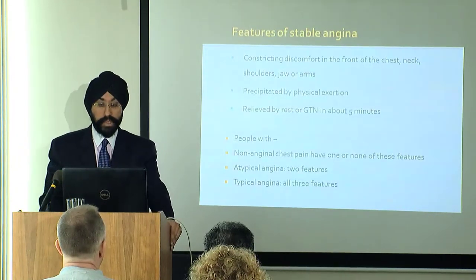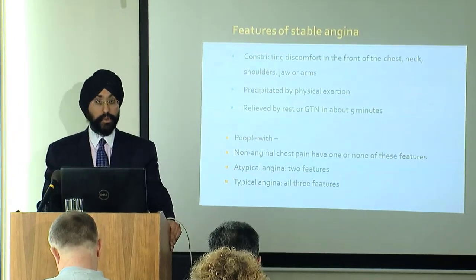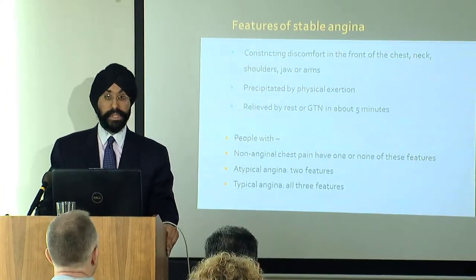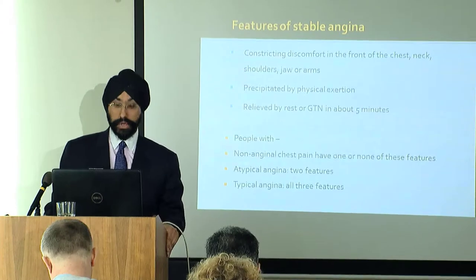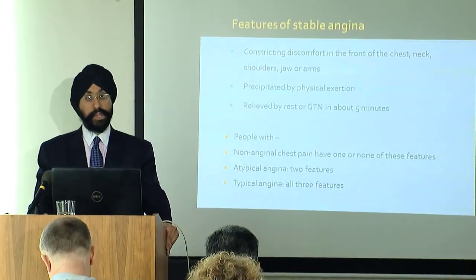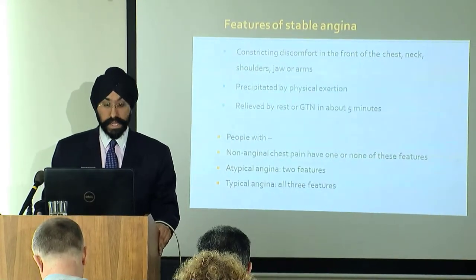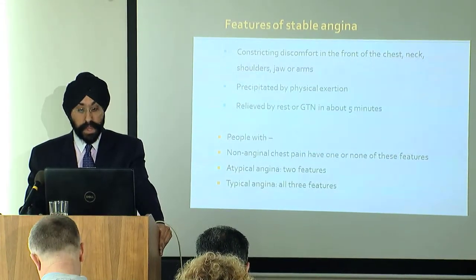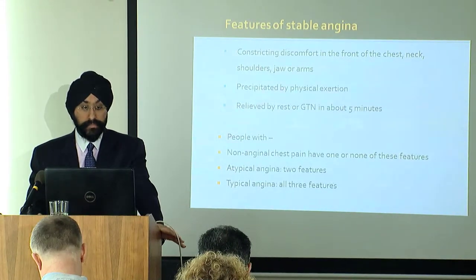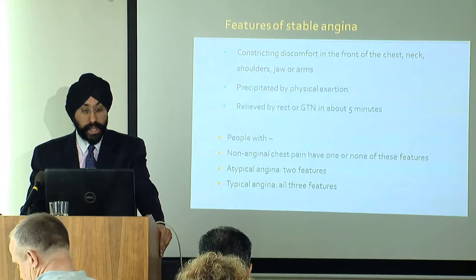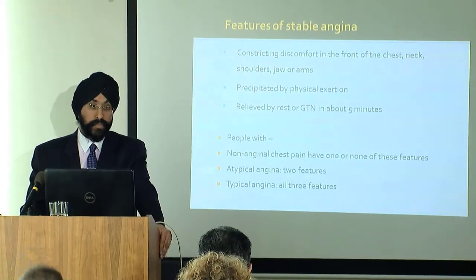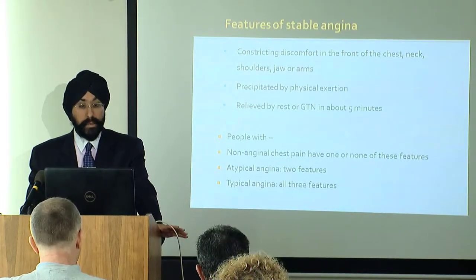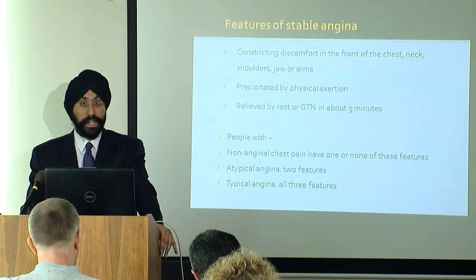The features of stable angina are: constricting discomfort in the front of the chest, neck, shoulders, jaws, or arms; precipitated by exercise; and relieved by rest or GTN. We use those features to describe the typicality. In people with non-anginal chest pain, they will have one or none of these features. If the angina is atypical, they may have two of these features. We call it typical angina if all three features are present.